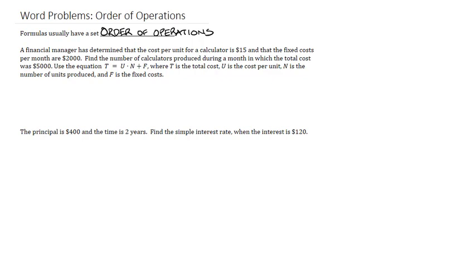If we look at this first problem, as scary as it might look when you first see it, all it really consists of is substituting numbers in. In this case, the cost per unit is $15, therefore u is going to equal 15.